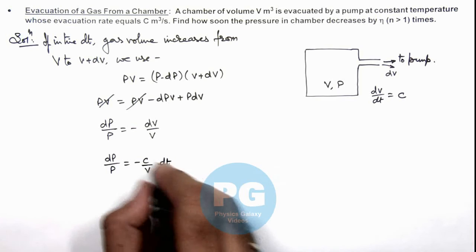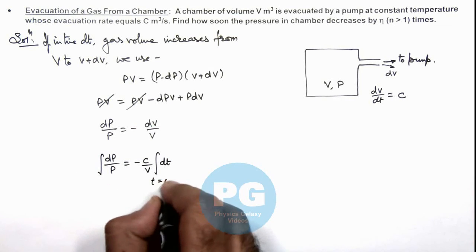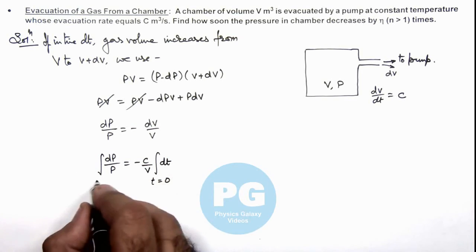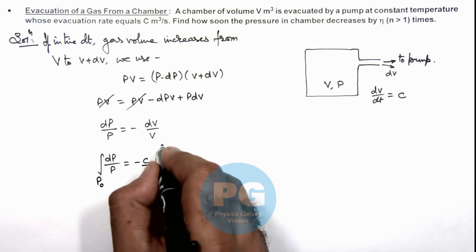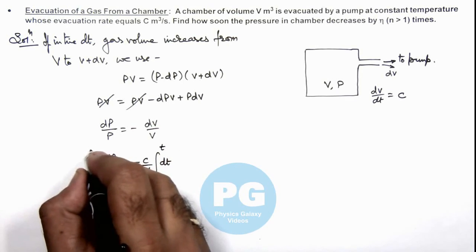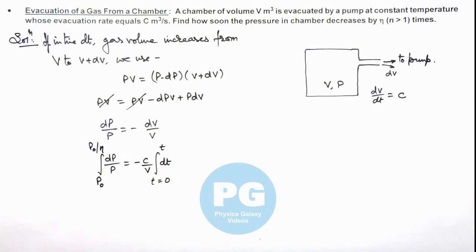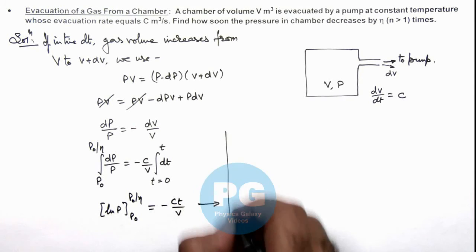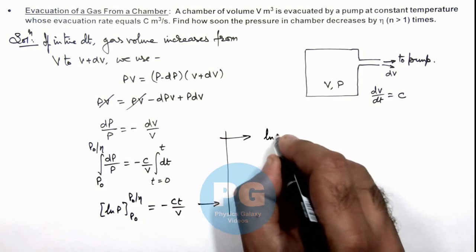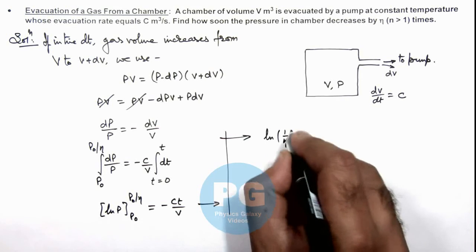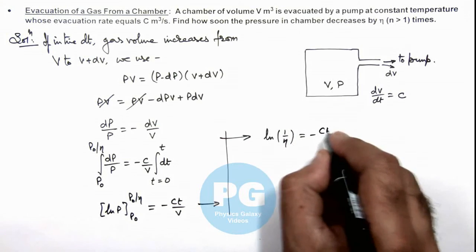So if we integrate this relation: at t = 0, we consider pressure to be equal to P₀, and after time t pressure reduces from P₀ to P₀/η. Then in this situation, on integrating this gives us ln(P) within limits from P₀ to P₀/η, and this is -Ct/V. So further if we simplify this, it gives ln(1/η) = -Ct/V.